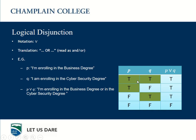The first three lines contain at least one TRUE, so the disjunction is TRUE in those cases. The disjunction will only be FALSE — corresponding to a lie — if both P and Q are FALSE. So the sentence 'I'm enrolling in the Business degree or in the Cybersecurity degree' is only FALSE if I don't enrol in either. If I enrol in one of them or in both, then I'm not lying.